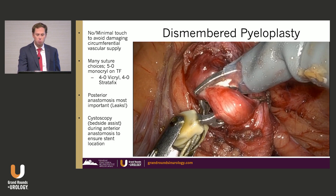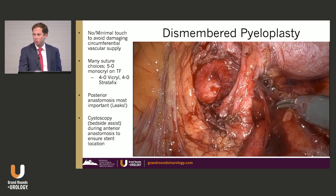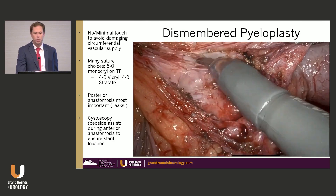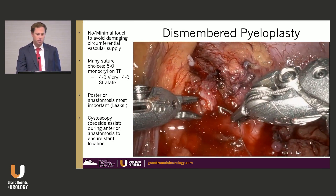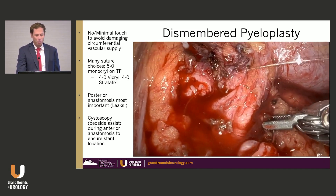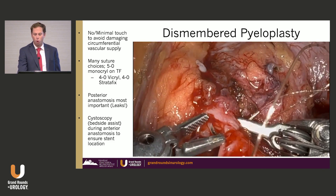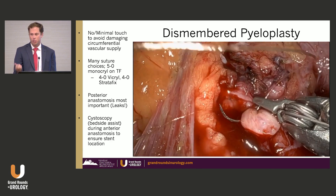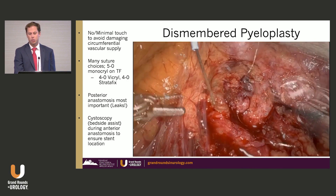We don't have proof that a no-touch technique is definitively the best way, but it probably matters given how strong the robotic instruments are. You want to avoid any crush injury — not just to the ureter but also to the circumferential blood supply. For suture choices, I typically use a 5-0 Monocryl on a TF needle, though 4-0 Vicryl, 4-0 Stratafix, or the PS2 needle are all good choices. The posterior stitches are by far the most important — nothing is fixed yet and you really want to avoid grabbing the ureter.